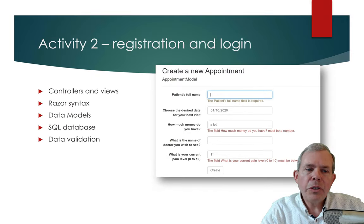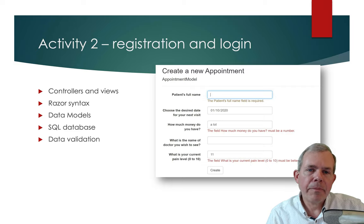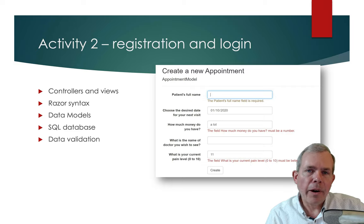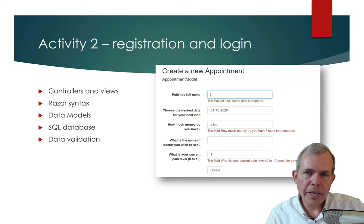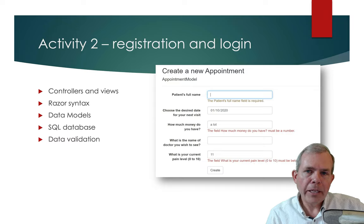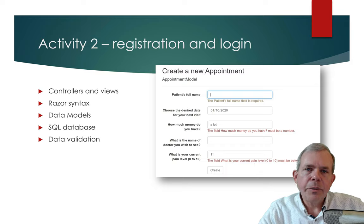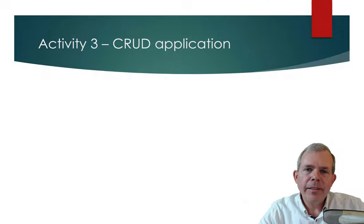In Activity 2, we start doing more programming and go a little more in depth. When we're done, we'll be able to create a registration and login application. This means we'll have a database, user models, and multiple views and controllers handling this basic process. ASP.NET has its own language called Razor, which is used for managing the front end.